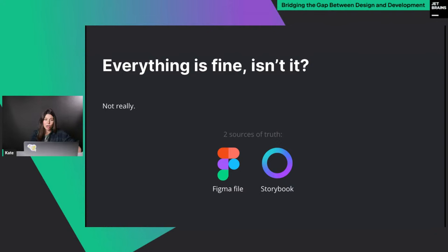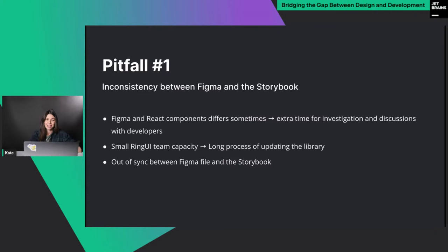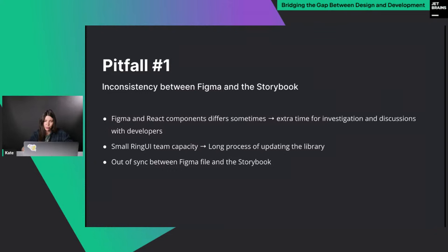The first pitfall is inconsistency between the Figma file and the Storybook. Sometimes we have slightly different components in the Figma file versus Storybook, and developers come to ask why a dialog has different margins, or which font to use when versions differ between Storybook and Figma. The developer then has to investigate and spend time deciding: should I implement the slightly different component from Figma and create a new component, or use the Storybook component and ignore the minor changes? It's unclear and takes time.